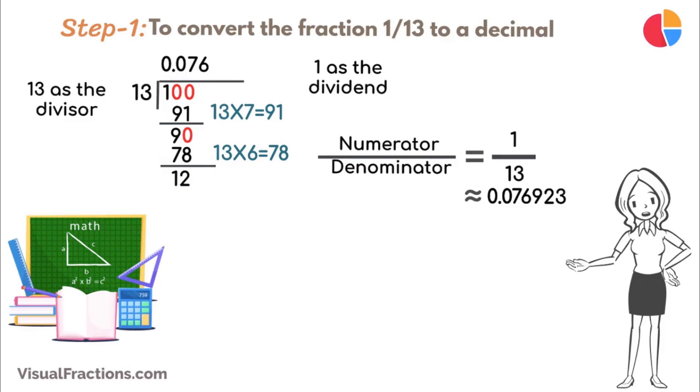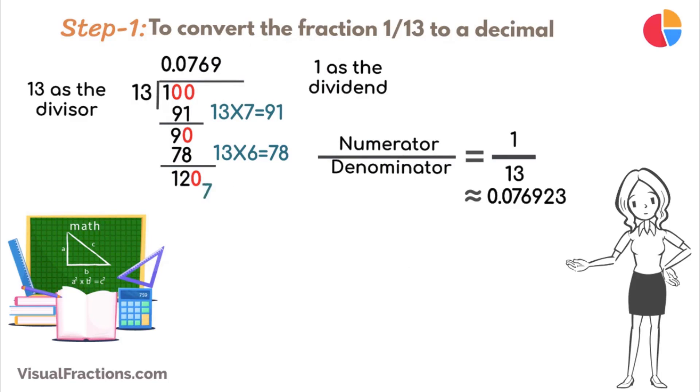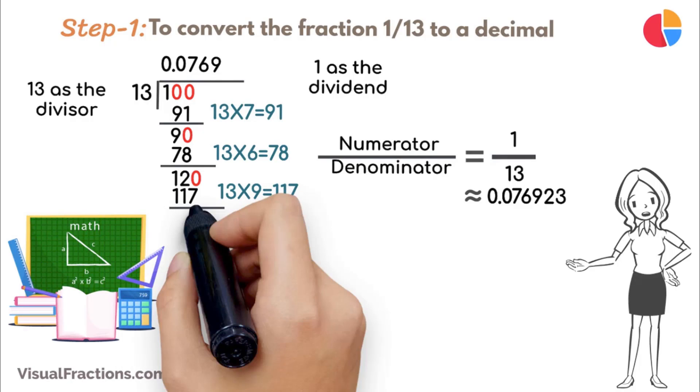Continue by bringing down another 0 to make it 120. 13 goes into 120 9 times, updating the quotient to 0.0769. Multiply 13 by 9 to get 117, and subtract this from 120, leaving a remainder of 3.